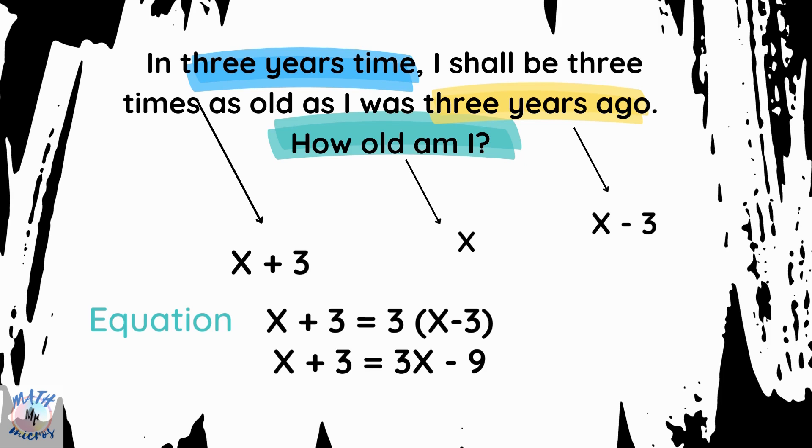So, you multiply the 3 with x and 3 with 3, which is 3x minus 9. And now, 9 plus 3 equals 2x. So, 2x equals 12 and x equals 6.